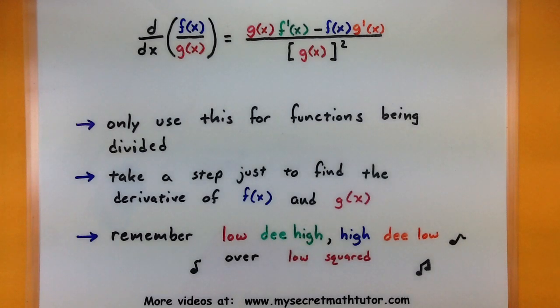In fact, if you say it enough times, it almost sounds like a weird nursery rhyme. So low d high, high d low, over low squared. And if you remember that crazy little phrase, you will never forget your quotient rule. So those are just a few quick tips. Let's get into a couple of examples and see how we can use this thing.